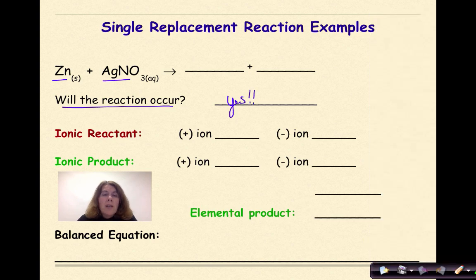So our ionic reactant, that's what we're talking about here. This is our ionic reactant. So we have Ag plus one, and our ion is going to be NO3 minus one.